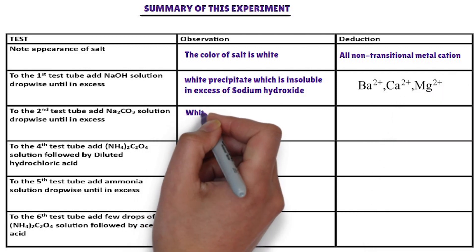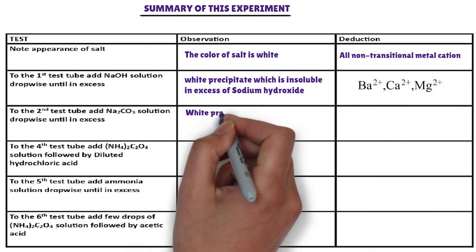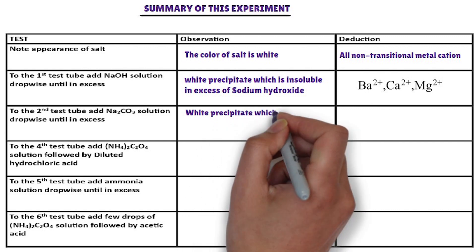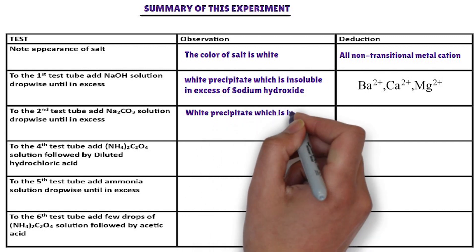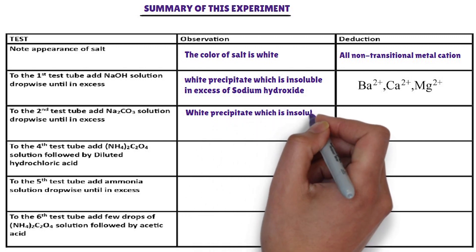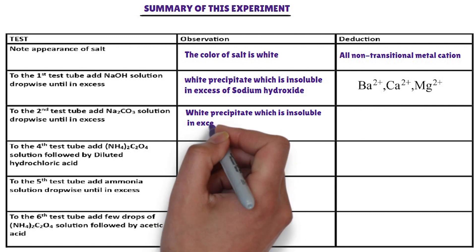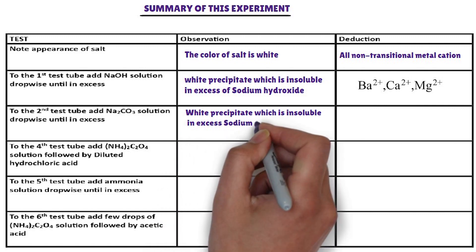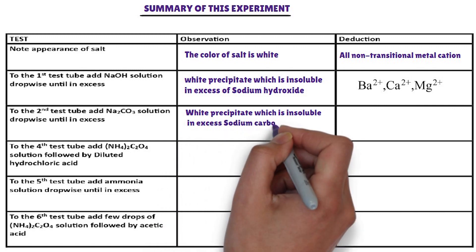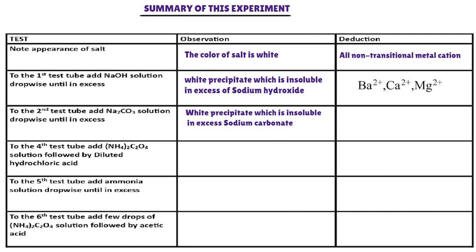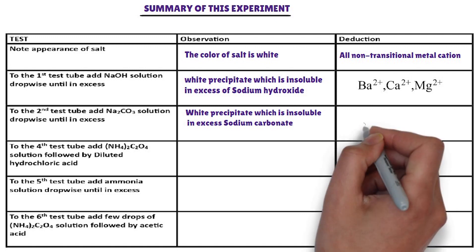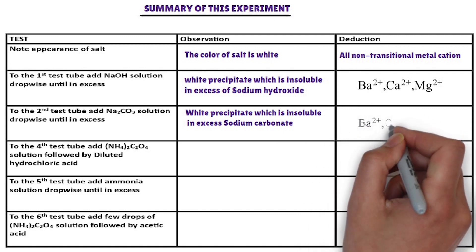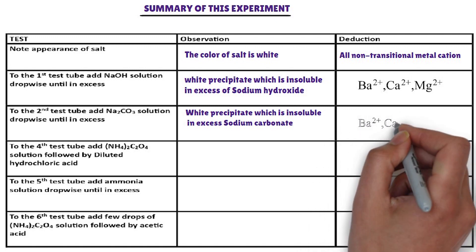In the second test tube, sodium carbonate solution is added. The cations from the above list that form a white precipitate with sodium carbonate, and the precipitate is insoluble in excess sodium carbonate, are magnesium ion, calcium ion, and barium ion.